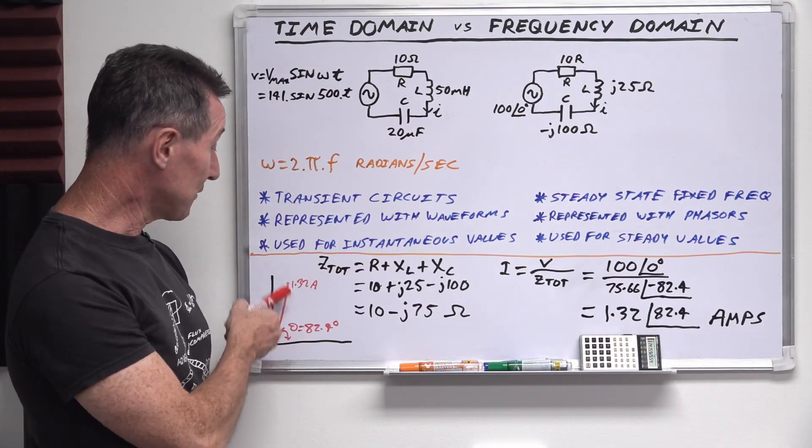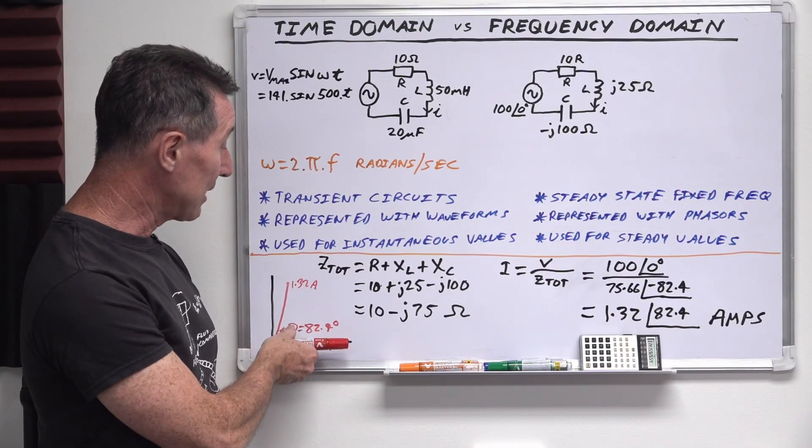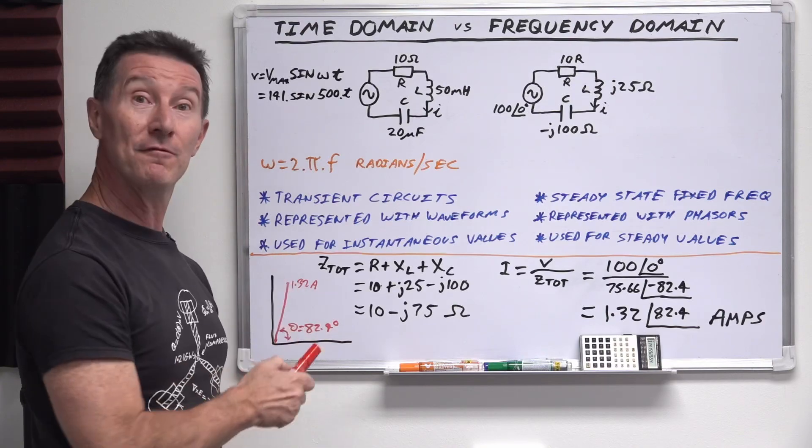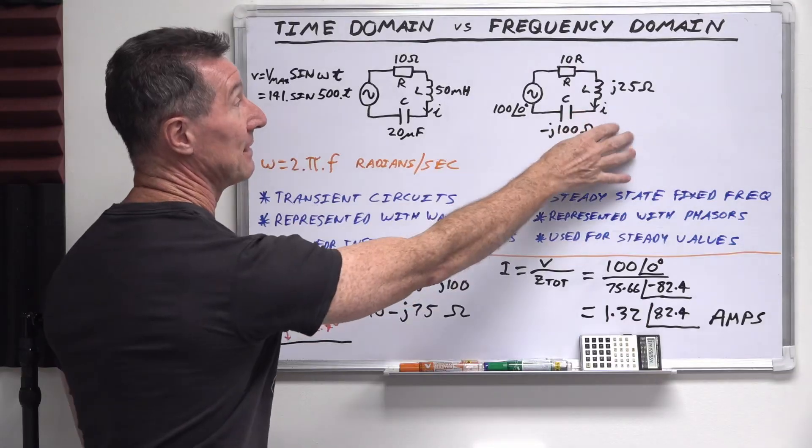So a polar diagram is just a phaser like that of the 1.32 amps as the magnitude, and the phase angle is positive 82.4 degrees, like that. Bingo! We've solved our, for the current in the circuit.